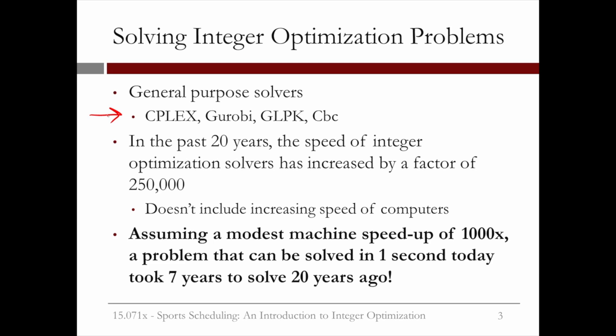In the past 20 years, the speed of integer optimization solvers has increased by a factor of 250,000, which doesn't even include the increasing speed of computers. Assuming a modest machine speedup of 1,000, this means that a problem that can be solved in one second today took seven years to solve 20 years ago.